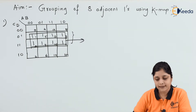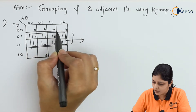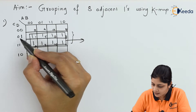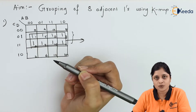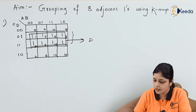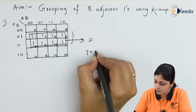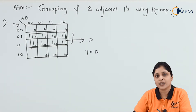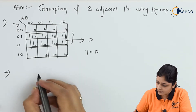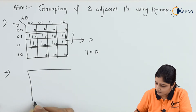After labeling, you can make a group of eight ones and write down the answer. The procedure is: A and B are both changing, so we will not consider A and B. C is changing from 0 to 1, so we don't consider C either. D remains the same, so the final answer is Y = D.